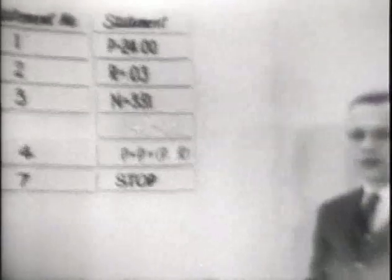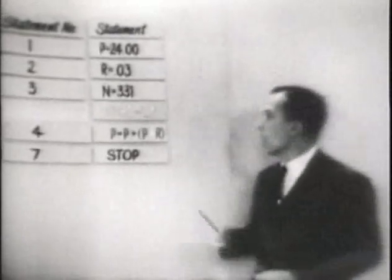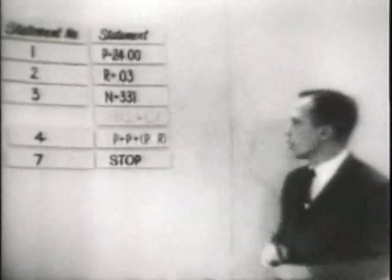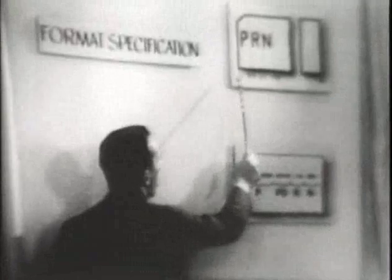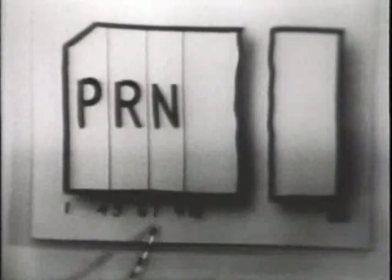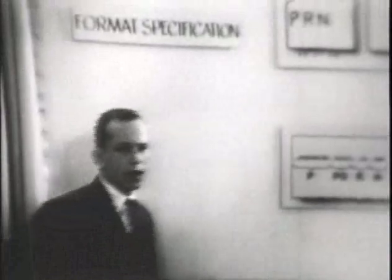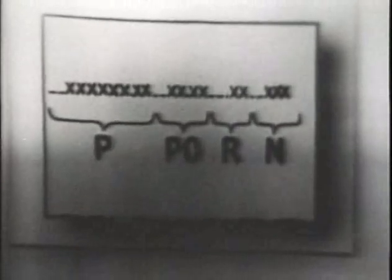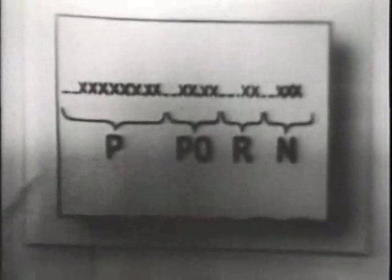One may ask: can we extend this to handle any value of P, R, and N? The answer is certainly yes. We can use a deck of cards, each card containing a value for the principal, the rate, and the number of years over which we wish to compute the compound interest. The principal being in columns one through four, the rate in columns five through six, and N, the number of years, in columns seven, eight, and nine. For each card, we would produce a printout. The output format would have the calculated principal amount in the first eleven columns, followed by the original principal, the interest rate, and the number of years over which we performed the calculation.